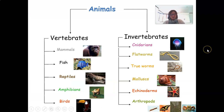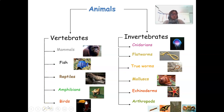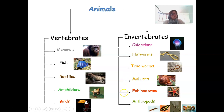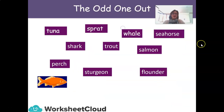So there you have it, Grade 7s — our vertebrates and invertebrates. We looked at mammals, fish, reptiles, amphibians, and birds, and you should now be able to identify a few basic characteristics about them. We also looked at cnidarians, flatworms, true worms, mollusks, echinoderms, and arthropods.